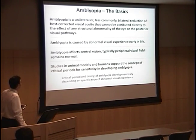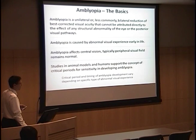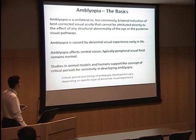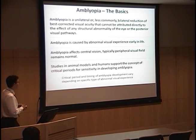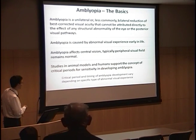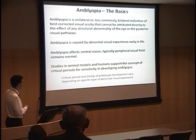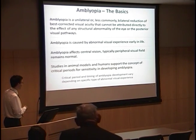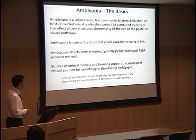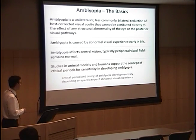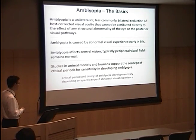Some of the basics about amblyopia: amblyopia is a unilateral — or this can occur bilaterally as well — reduction of best-corrected vision that cannot be attributed directly to any structural problem within the eye or the posterior visual pathways. It's caused by abnormal visual experience early in life, and it typically affects central vision to a much greater extent than peripheral vision. Studies in animal models and humans support the concept of critical periods for sensitivity in developing amblyopia, and the timing of that critical period and the degree to which amblyopia develops depends on the specific type of abnormal visual experience.